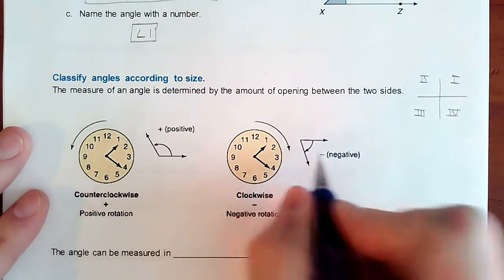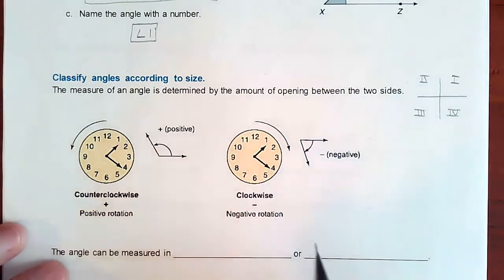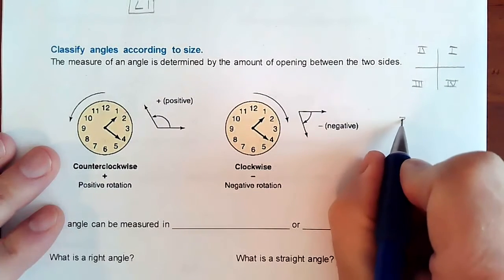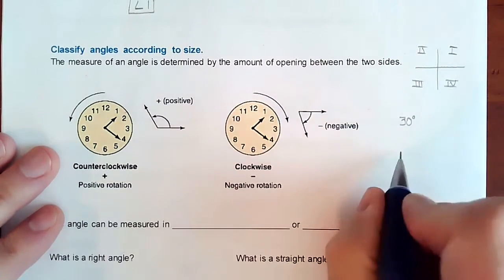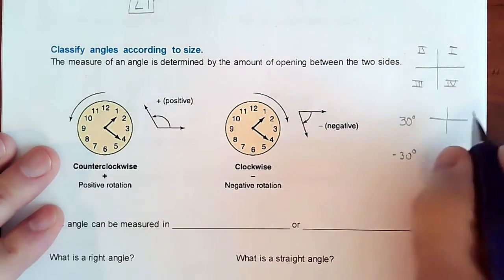If we go the other direction counterclockwise, we are heading in a negative direction. Okay, so for example, if you're talking about a 30 degree angle versus a negative 30 degree angle, all it is, is the direction that you're going.